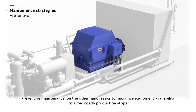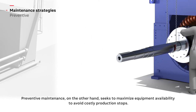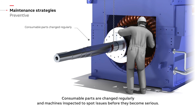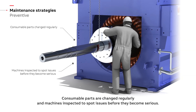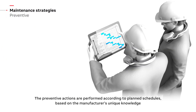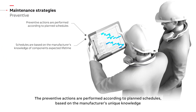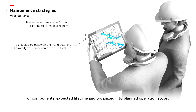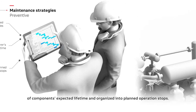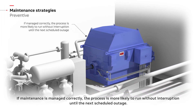Preventive maintenance, on the other hand, seeks to maximize equipment availability to avoid costly production stops. Consumable parts are changed regularly and machines inspected to spot issues before they become serious. The preventive actions are performed according to planned schedules, based on the manufacturer's unique knowledge of components' expected lifetime and organized into planned operation stops. If maintenance is managed correctly, the process is more likely to run without interruption until the next scheduled outage.